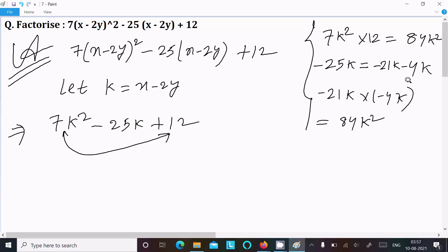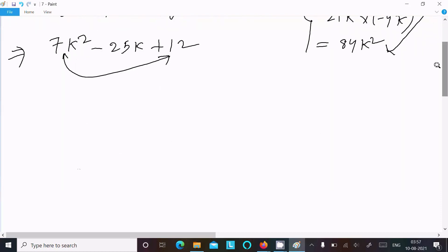Minus 21k into minus 4k, so this is 84k². These two are the same. Now writing here 7k² in place of minus 25k writing minus 21k minus 4k plus 12.